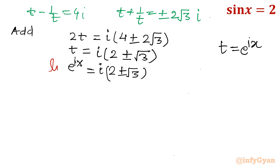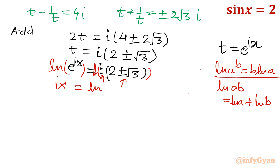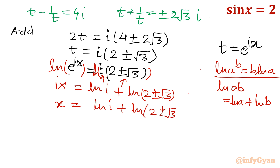Using the property ln(ab) equals ln a plus ln b, with i as a and (2 plus or minus root 3) as b, we get ix equal to ln i plus ln(2 plus or minus root 3). Dividing both sides by i, x equals ln i plus ln(2 plus or minus root 3), all over i. This is our result.